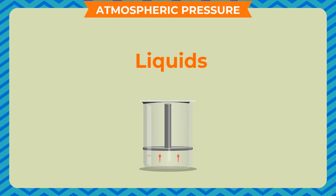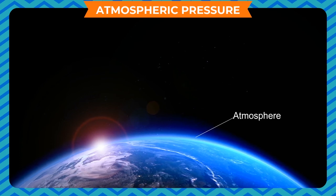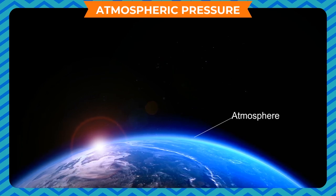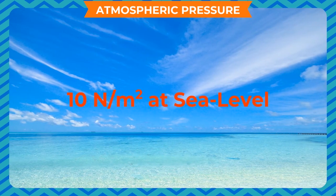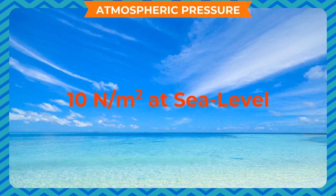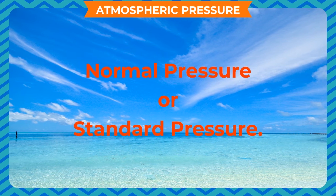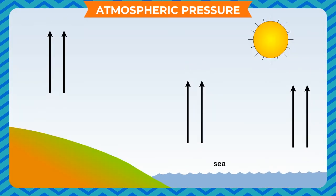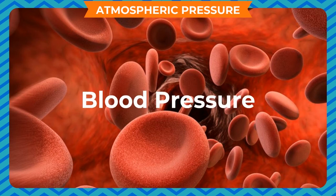Atmospheric Pressure: Just like liquids and solids, gases also exert pressure. The blanket of air around us is called the atmosphere, and the pressure exerted by it is called atmospheric pressure. The atmospheric pressure is about 10⁵ N per meter squared at sea level, also called normal or standard pressure. We do not feel this pressure under normal conditions as it is counterbalanced by the pressure of the blood running in our blood vessels, called blood pressure.